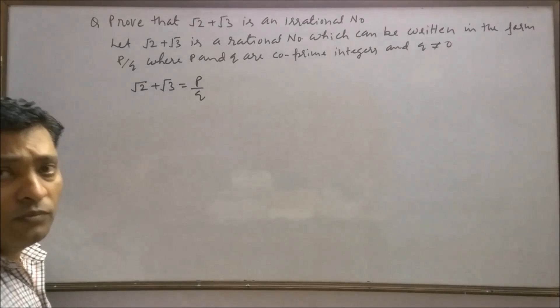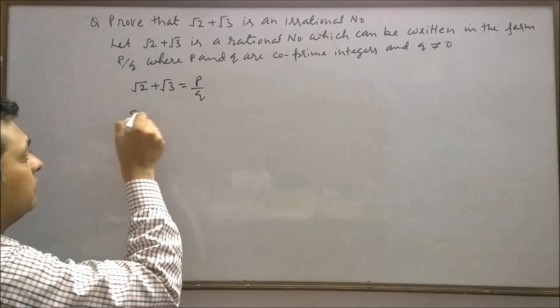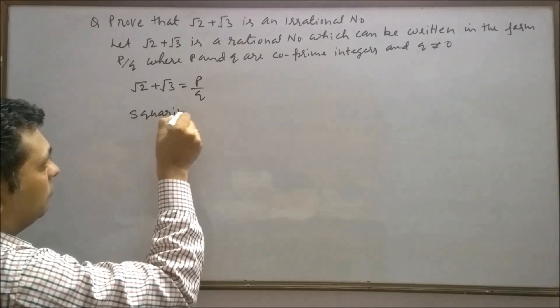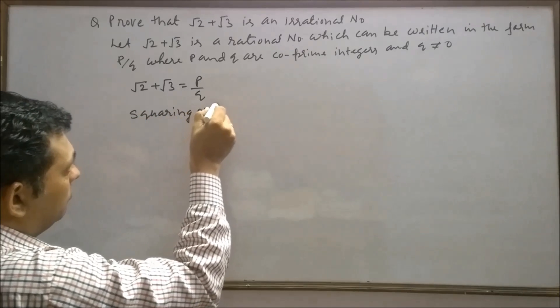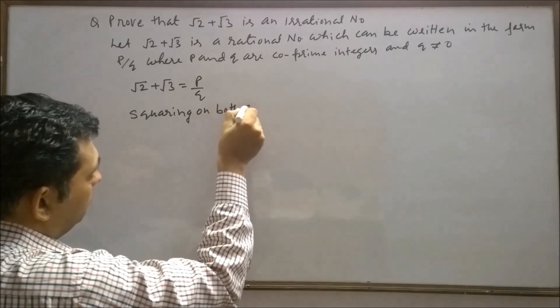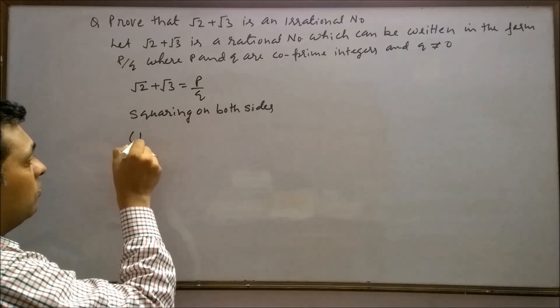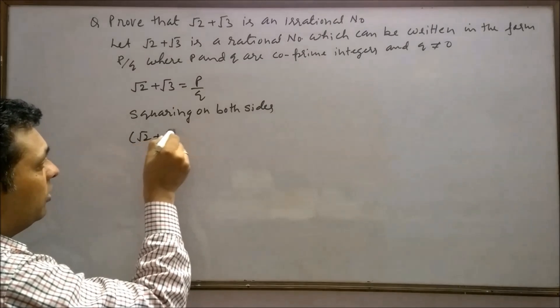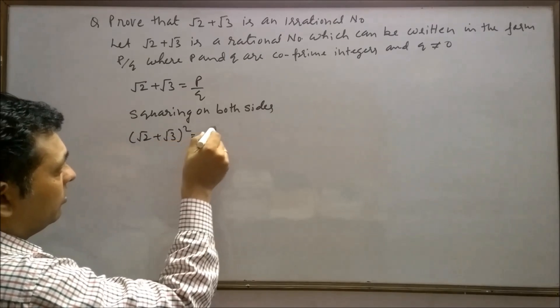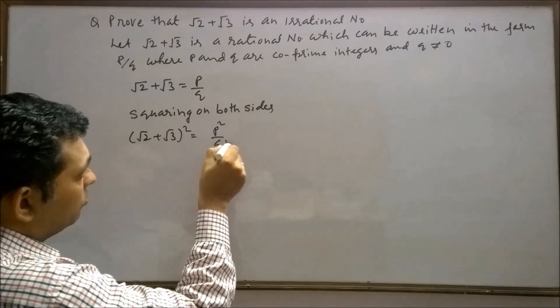Squaring on both sides, root 2 plus root 3 whole square will equal p square upon q square.